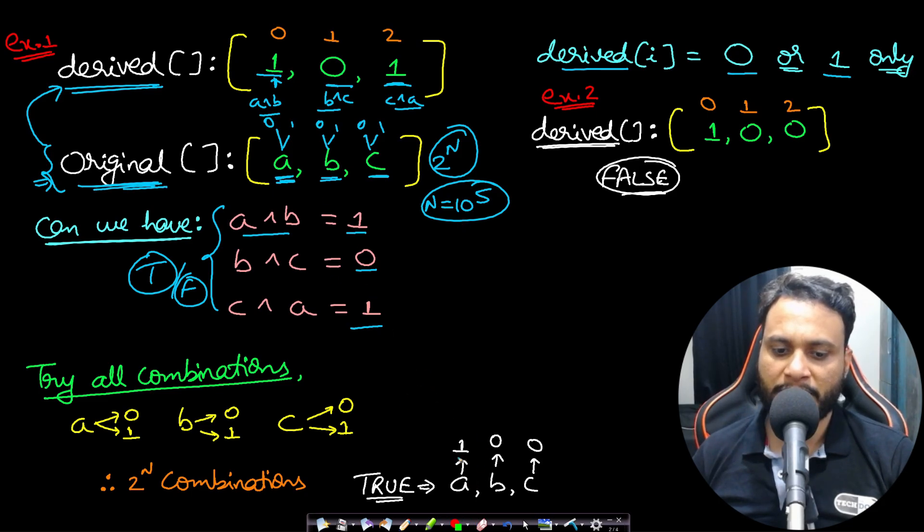Now in this particular example, if you take a equals to 1, b equals to 0, c equals to 0, then it will be giving us a XOR b equals to 1, b XOR c equals to 0, and c XOR a value equals to 1. So we will get [1, 0, 1]. Since we have a valid value of a, b, c to be [1, 0, 0], therefore we need to return true for this particular example.